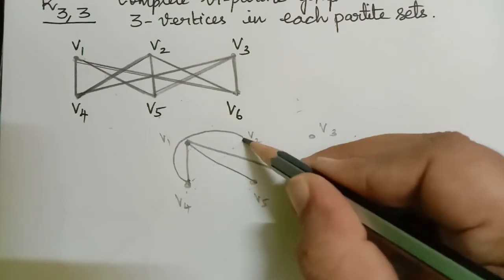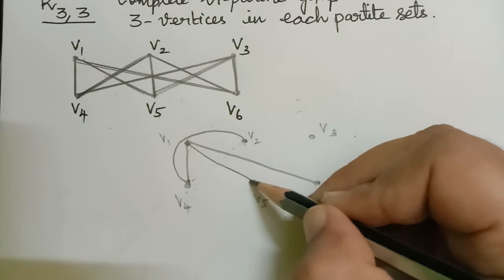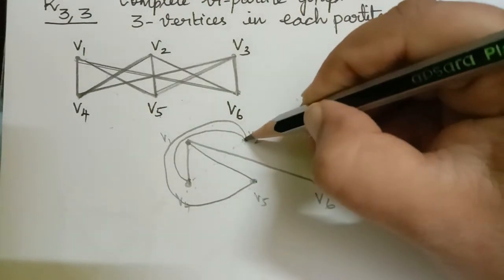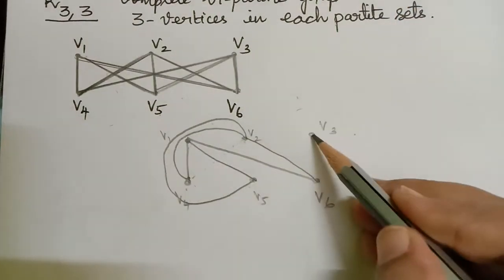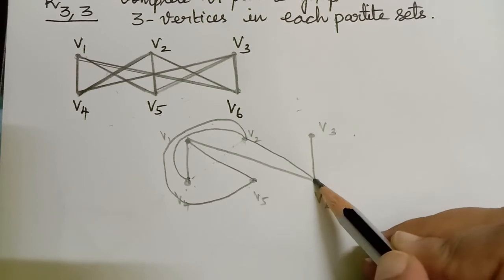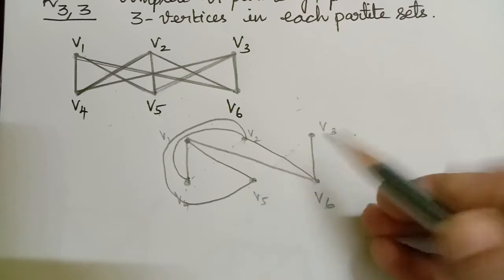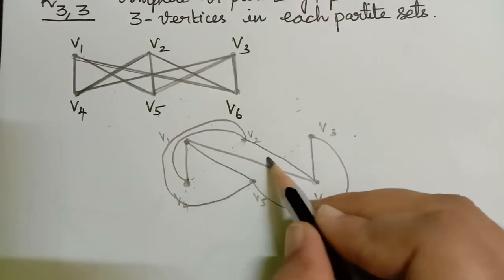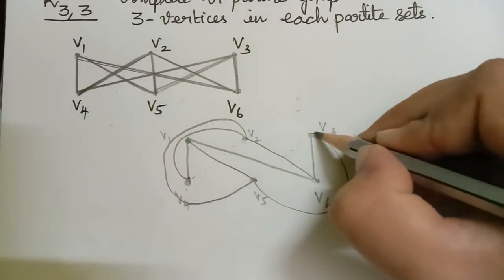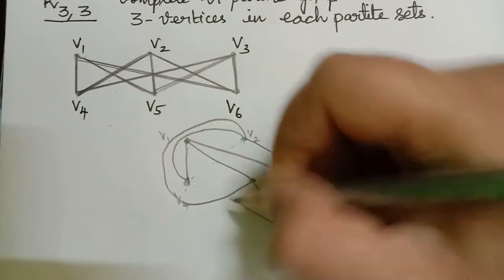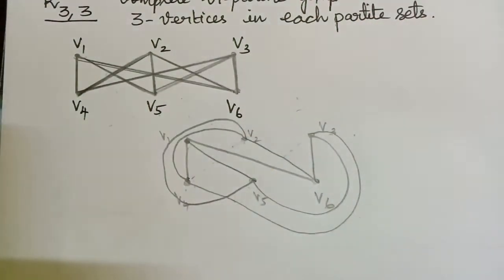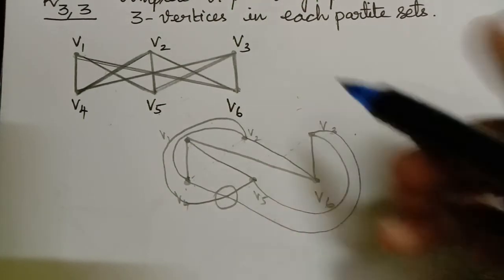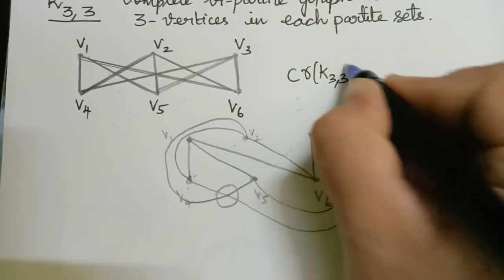From V2 to V5, taking a direct route would cause a crossing, so we bring it in a different manner to reach V5. V6 from V2 can be drawn without crossings. From V3 to V6 we draw a line without crossing, but to V5 a direct route gives two crossings, so we reroute it. From V3 to V4, in order to avoid too many crossings we reroute it, but we must make one crossing to reach this point. Therefore the crossing number of K33 is equal to 1.